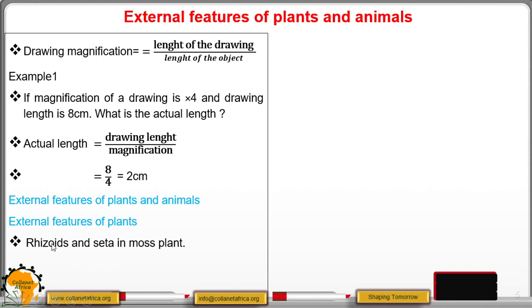But the rhizoids are like roots in moss plants. Seta is the one that is holding the spores, the one that is holding the capsule and the capsule contains the spores. So this is a typical moss plant.